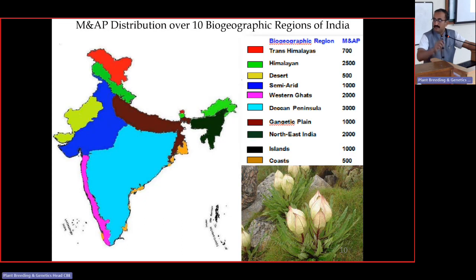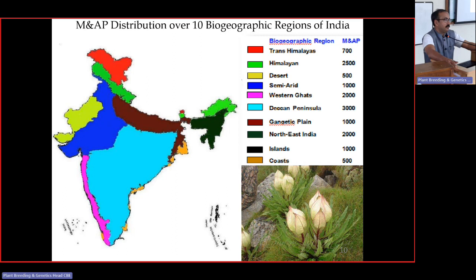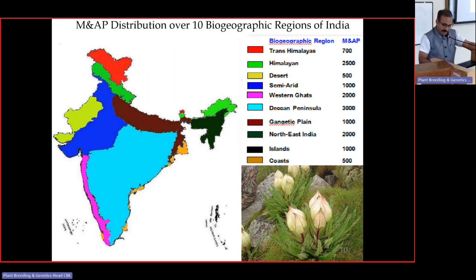Only 10 to 20% of medicines come from organized cultivation, while the remaining comes from wild sources. Herbs contribute the maximum — about 32%, followed by trees at 33% and shrubs at 20%. This is the distribution across the 10 biogeographic regions of India. The Trans-Himalayas and Himalayan region together constitute more than 3,000 species, Western Ghats 2,000, Deccan Peninsula 3,000, and Northeast India 2,000.